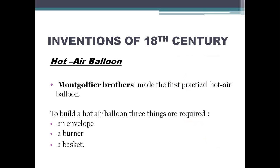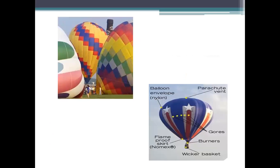Next are the inventions of the 18th century. First is the hot air balloon. The Montgolfier Brothers made the first practical hot air balloon. To build a hot air balloon, three things are basically required: the envelope, the burner, and the basket. Pictures show the envelope of the hot air balloon, and the second picture shows many parts: balloon envelope, flameproof skirt, gores, burners, and wicker basket.